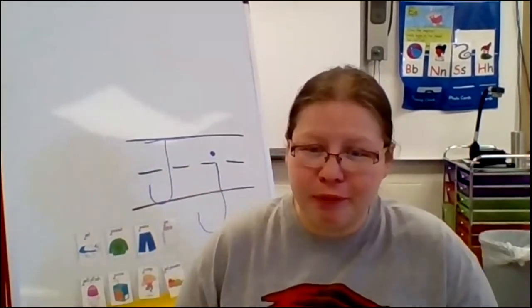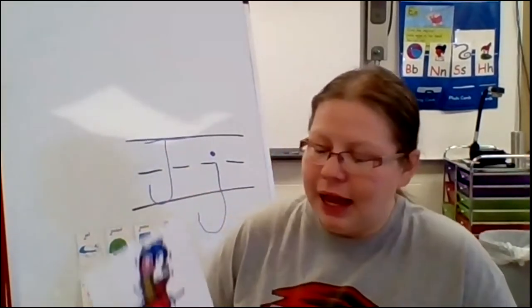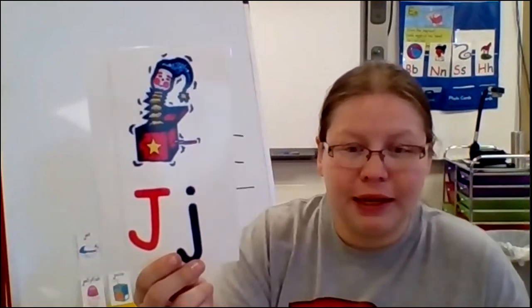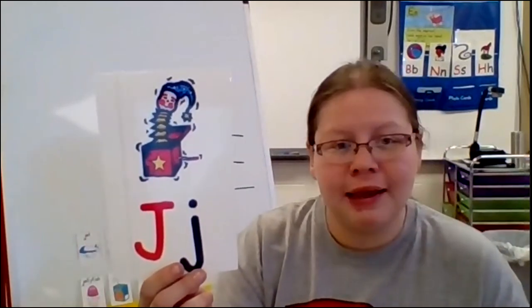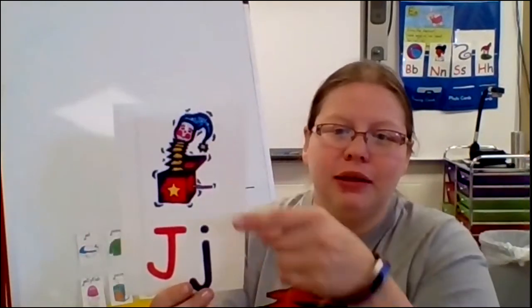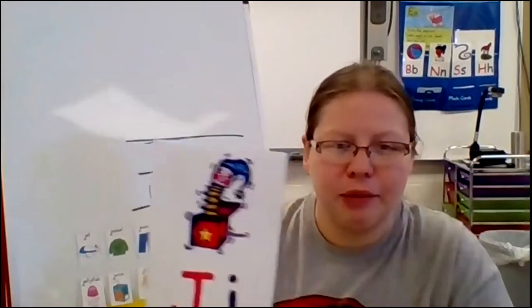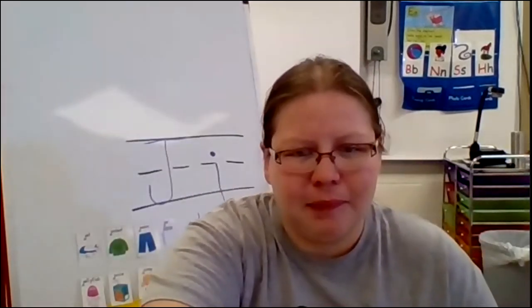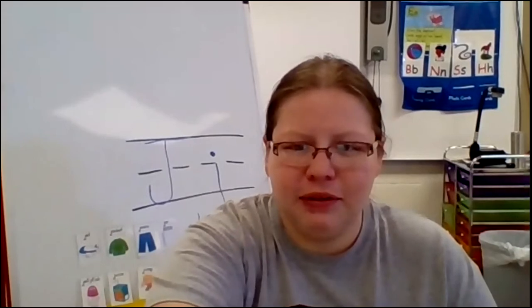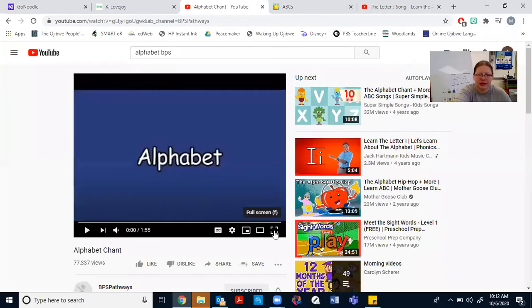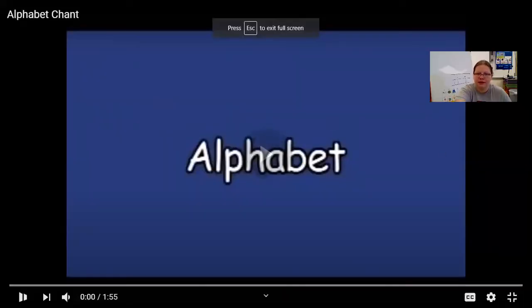Alright, I have one more song I'm going to play for you. We're going to do our alphabet song. And remember, our secret letter that we're looking for is J. And the sound is Juh, like Juh, Juh, Jack in the Box. So I'm going to start the alphabet chant. Remember, we're looking for Juh.